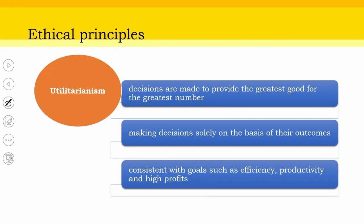The first and foremost one is Utilitarianism. Utilitarianism essentially means the decisions are made to provide the greatest good for the greatest number. So in any particular room, if you are benefiting the maximum number of people, in an organization if you are working for the good of the greatest number, you are ensuring that there is utilitarianism — making decisions solely on the basis of their outcomes.